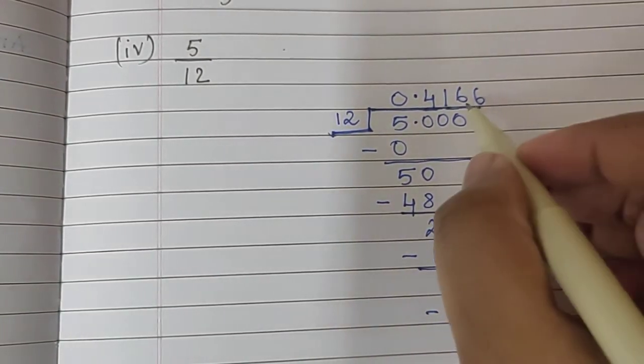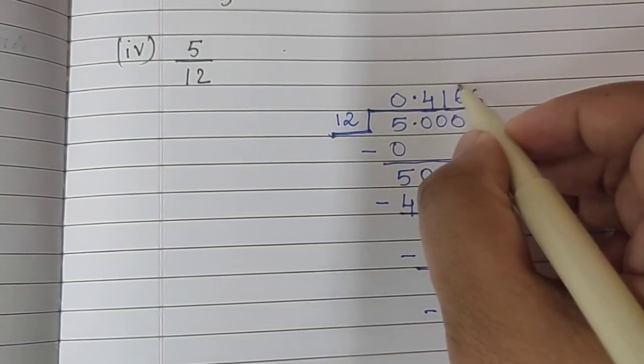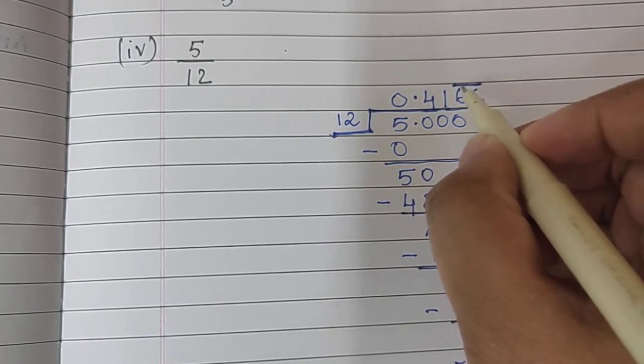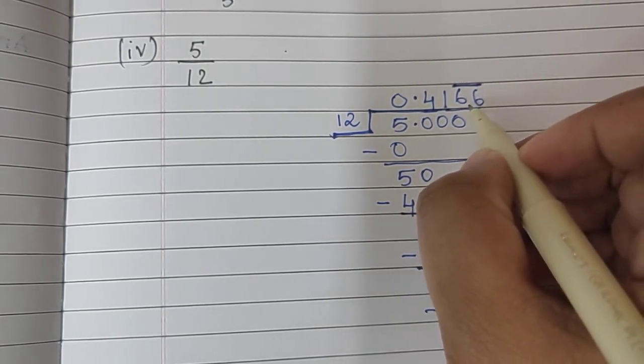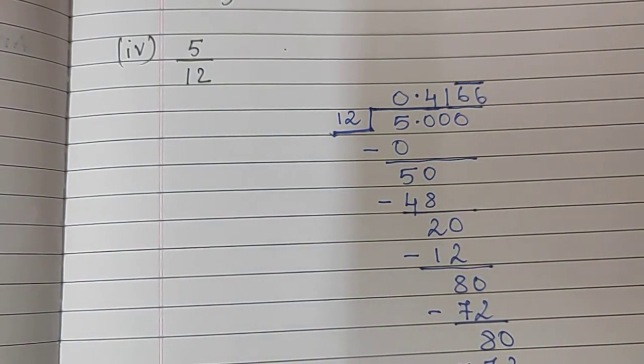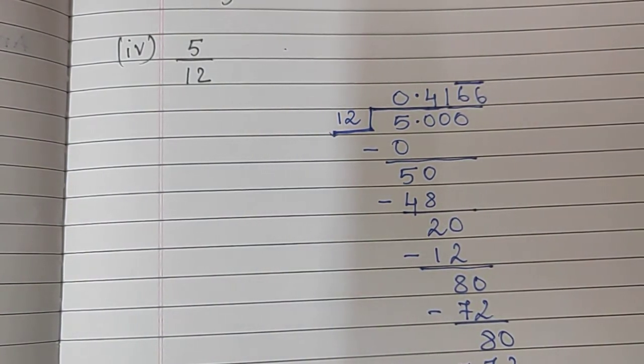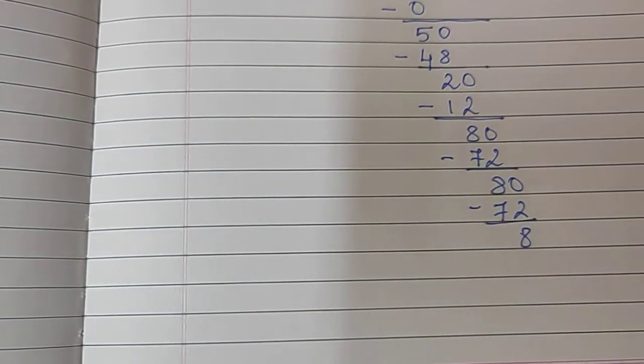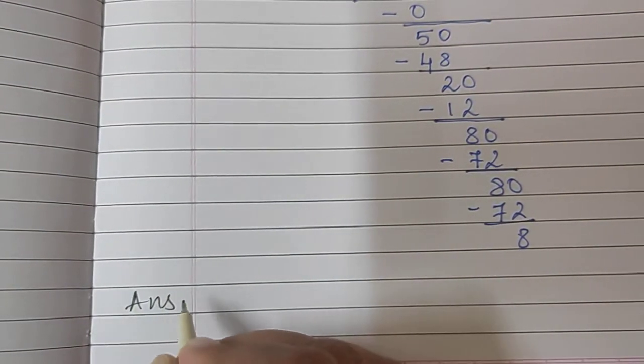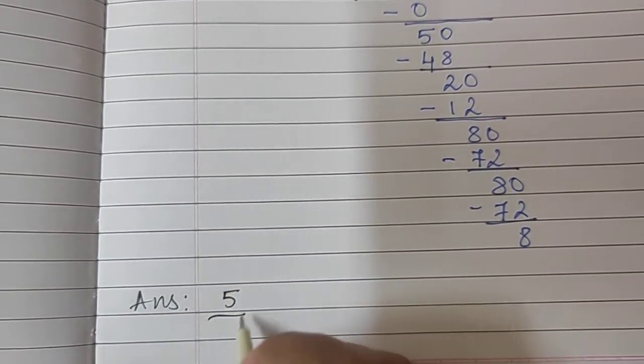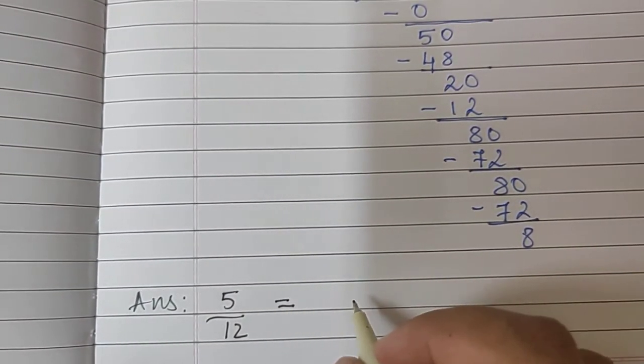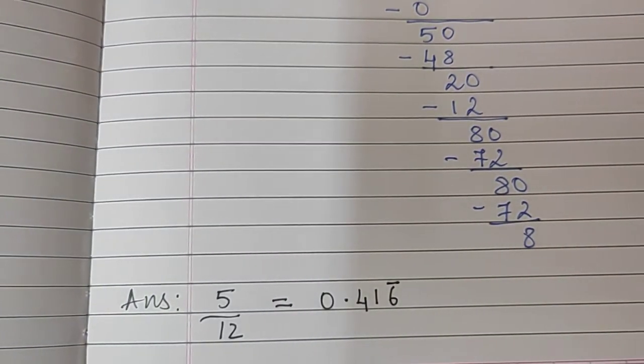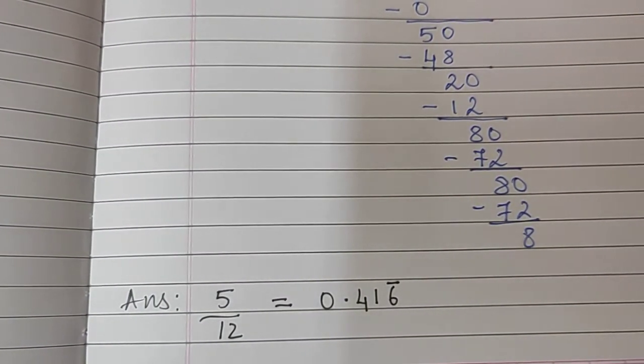So, only 6 is repeating here. So, I put a line on 6. That means 6 is occurring again and again. So, we call it recurring number. So, the number 6 is recurring here. My answer will be 5 upon 12 is equal to 0.416 and 6 is recurring. So, I put a line on 6. Moving to the next sum.